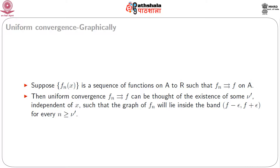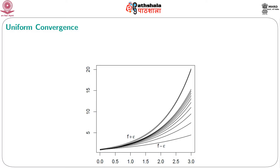Let us start some graphical illustration of uniform convergence. If f_n(x) converges uniformly on A, then uniform convergence can be thought of as the existence of some ν' independent of x such that the graph of f_n will lie inside the band from f − ε up to f + ε for n ≥ ν'. The existence of such a band can be seen from the definition. As we increase n, all the curves become enclosed within this band.